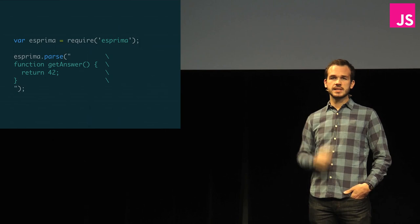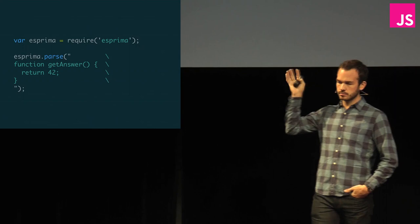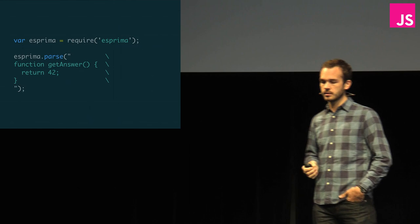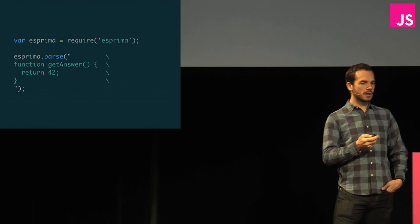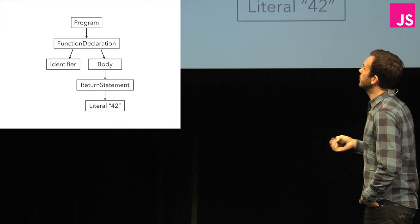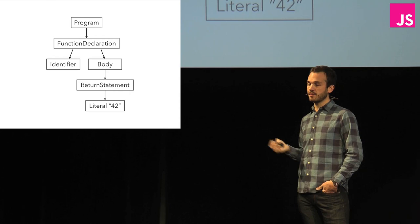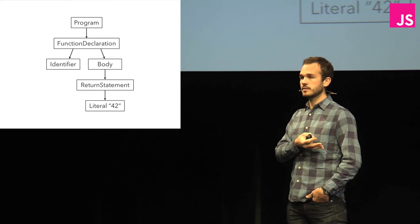This is a really simple example of what you can do with Esprima. It has a nice, simple API — you just require Esprima and call the parse function. Here's a very simple JavaScript program: a single function that returns a value. Esprima is going to emit a parse tree that looks something like this. At the top level we have a program. The program consists of one thing, a function declaration. The function declaration has an identifier — the name of the function — and it has a body. The body has one thing: a return statement that returns 42.